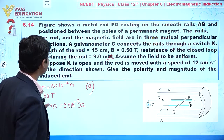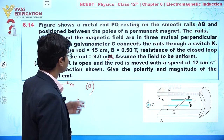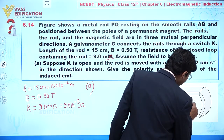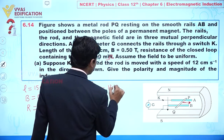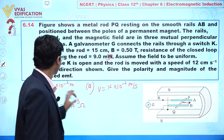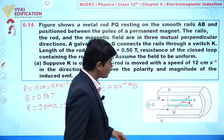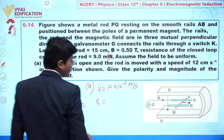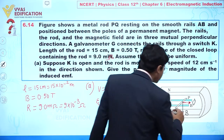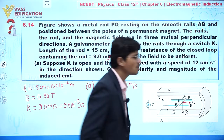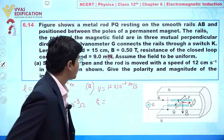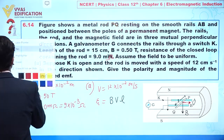In part (a), the key K is open and the rod is moving with a speed of 12 cm/s, i.e., 12×10⁻² m/s. We need to find the polarity and magnitude of the induced EMF. The magnetic field is in the downward direction, the velocity vector is perpendicular to B, and the length of the rod is also perpendicular to both B and V — so B, V, and L are all mutually perpendicular.